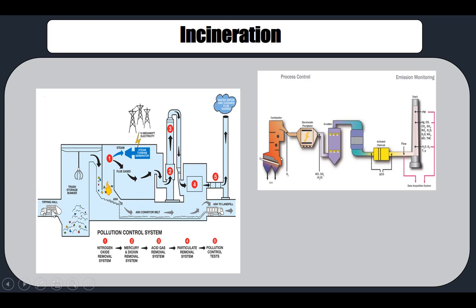Here is a diagram of an incinerator. You can see trash getting dropped off, then picked up and burned. All the non-combustible ash comes down on a conveyor belt, is picked up by a truck, and gets disposed of in a landfill — typically a hazardous waste landfill.